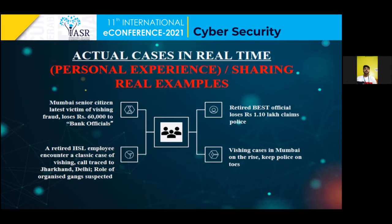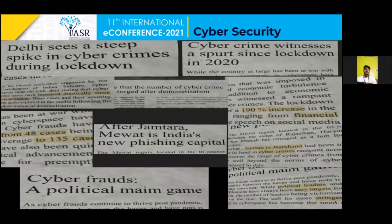It was observed that when these calls were traced back, most of them were from Jamtara and Mewat, and both are now known as the vishing capitals of India. During the lockdown period, the growth of such crimes increased exponentially as almost every transaction and work was carried out via internet. Some news snapshots show: 'Delhi sees a steep spike in cyber crimes during lockdown,' 'After Jamtara, Mewat is the new vishing capital of India,' and 'Cyber crimes witness a spur since lockdown in 2020.'